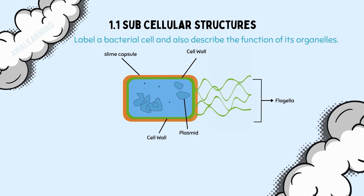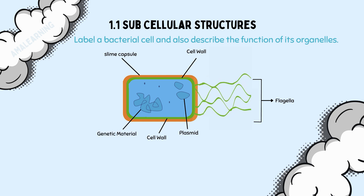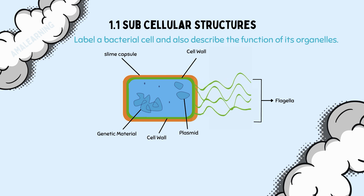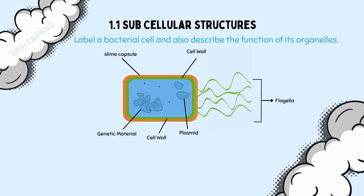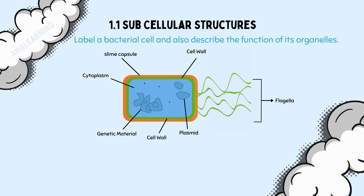The plasmid is a small section of DNA that codes for smaller proteins. The genetic material also codes for the larger proteins and generally controls the cell. The plasmid and genetic material, as previously explained, float around in the cytoplasm and are not within a membrane-bound nucleus.